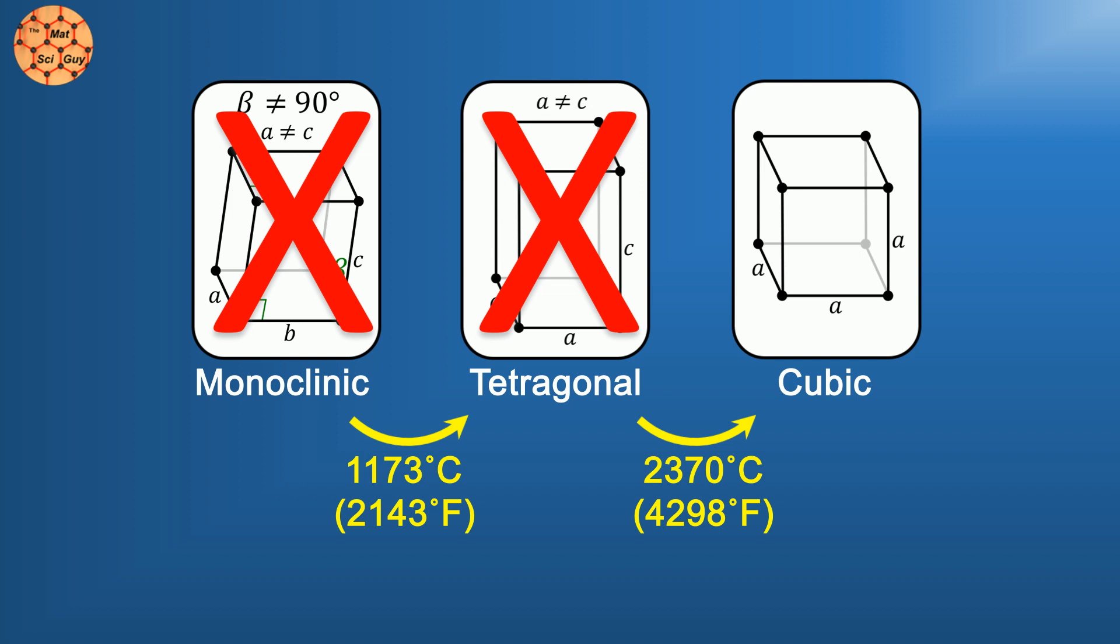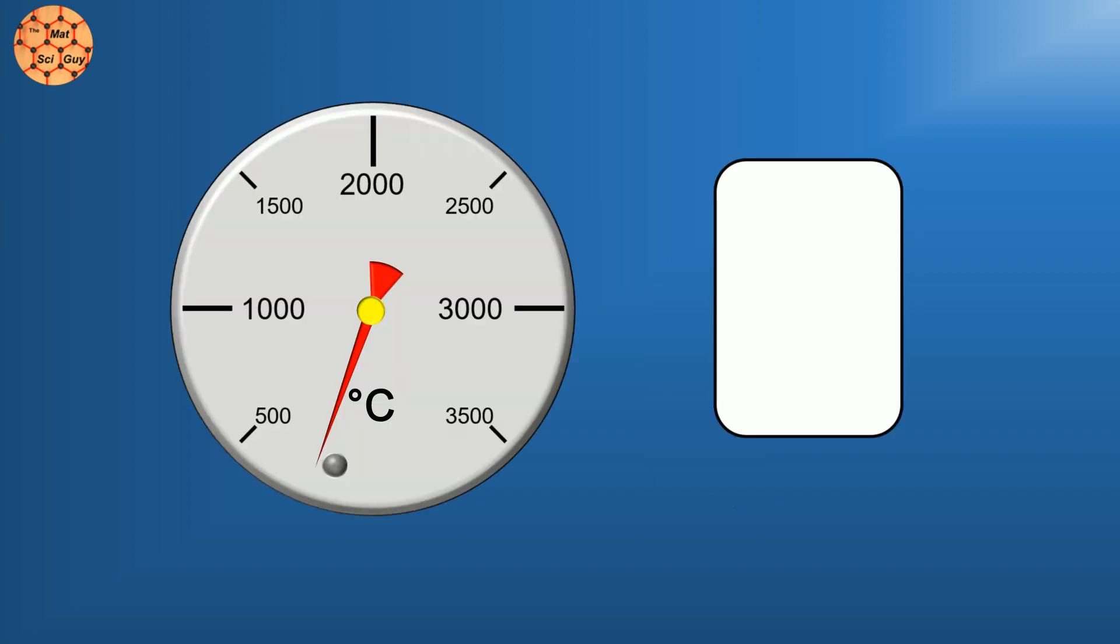These temperatures can be reached by a technique known as skull melting, but the problem is that these phase transitions occur in the other direction, too. Cubic zirconia formed at very high temperatures will inevitably revert back to its other forms upon cooling.